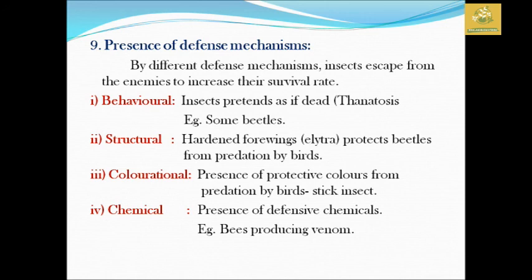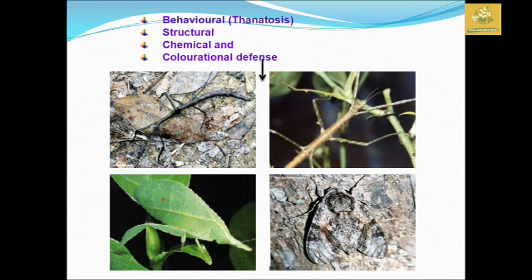The chemical defense is the final type. For animals, there is a behavioral difference. For example, bees use chemical defense. There is a bug that also uses structural and chemical defense. The surrounding area is protected as a result.